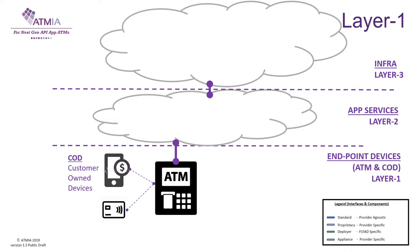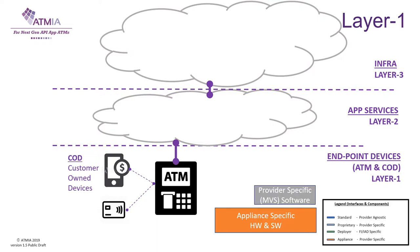The ATM Endpoint Device will contain appliance provider specific hardware and software, shown in orange. It can contain provider specific multi-vendor software and other software shown in grey, and a Deployer specific user interface app shown in green, which are connected through standard provider agnostic APIs in blue — like JavaScript, ECMAScript 6 — and leverage on the XFS standards.